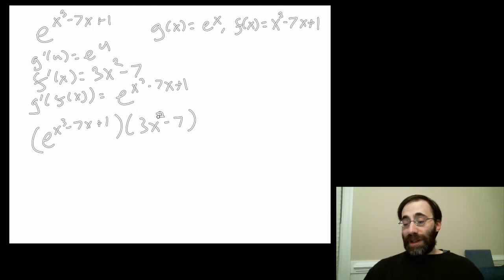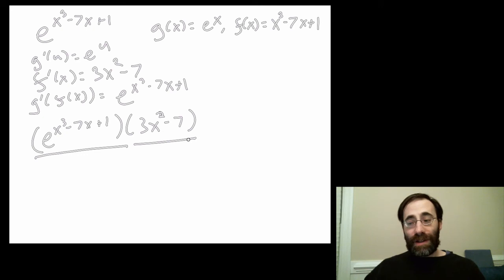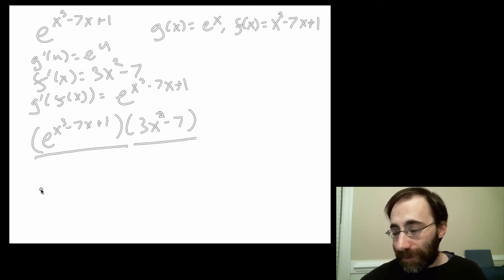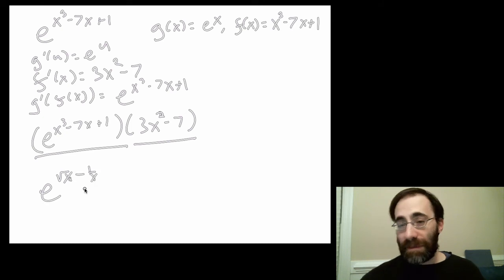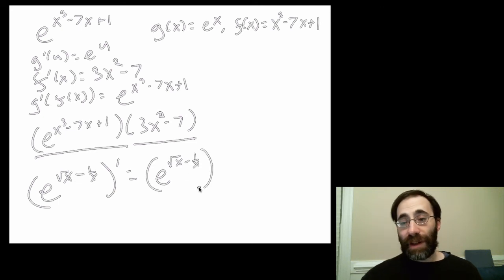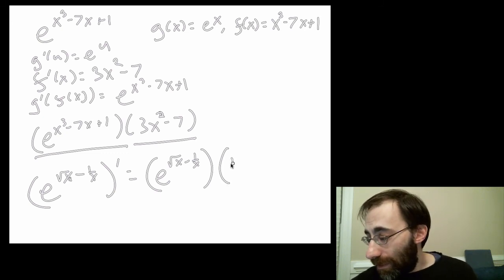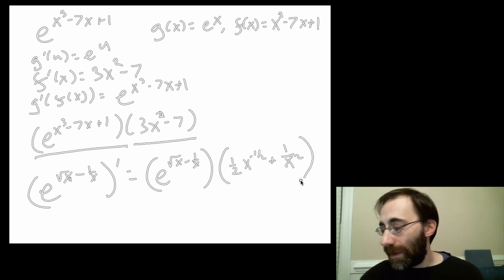This is actually a general pattern — we can skip some steps in the future because all these derivatives are the same type: you get back the original exponential and multiply it by the derivative of the expression in the exponent. For example, for e to the square root of x minus 1 over x, the derivative is just e to the square root of x minus 1 over x, times the derivative of the inside, which is one-half x to the negative one-half plus 1 over x squared. That's it.